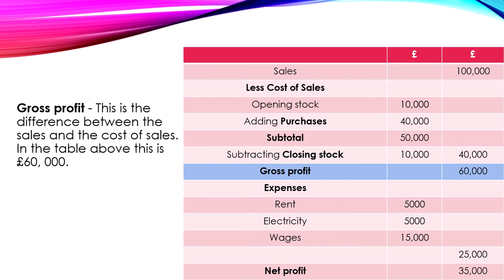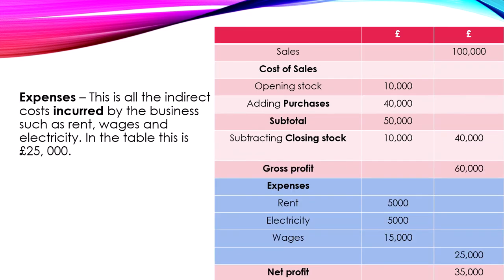Gross profit is the difference between the sales and the cost of sales. In the table above this is 60,000 euros. Expenses are all the indirect costs incurred by the business such as rent, wages and electricity. In the table this is 25,000 euros.